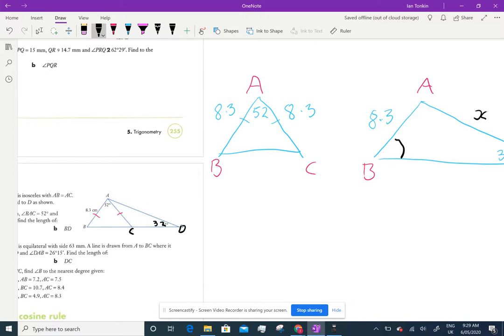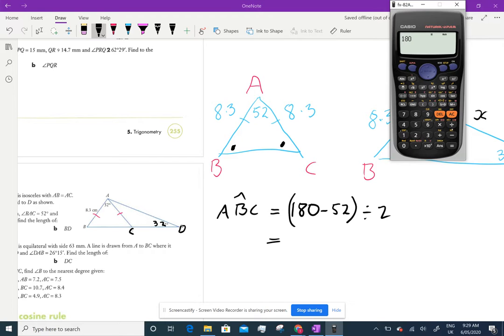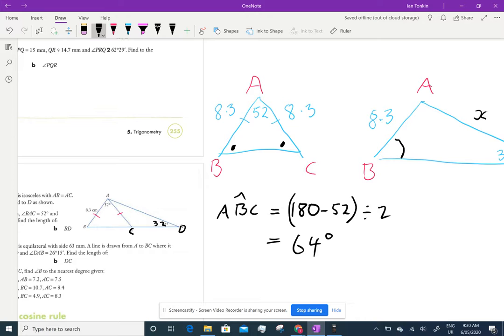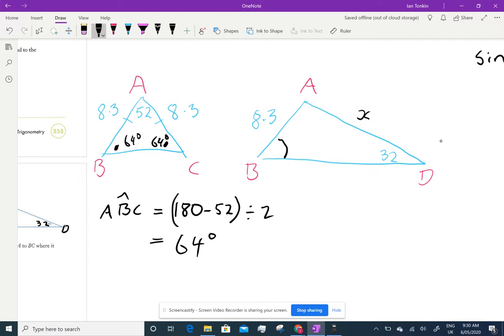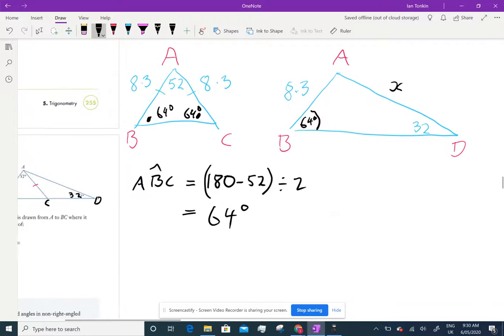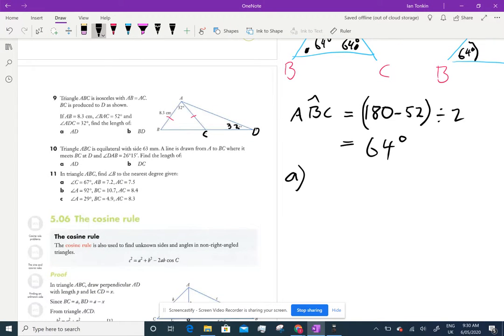I'm lucky because I know this is an isosceles triangle, so this angle and this angle are equal. So angle ABC equals 180 minus 52 divided by two, because there are two of them. So 180 minus 52 is 128, divided by two is 64. So that's 64 degrees and that's 64 degrees, which means this is 64 degrees.